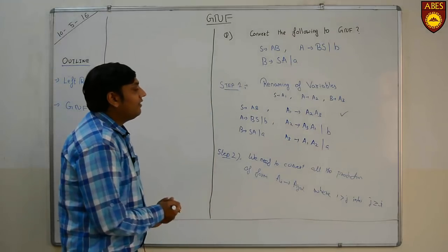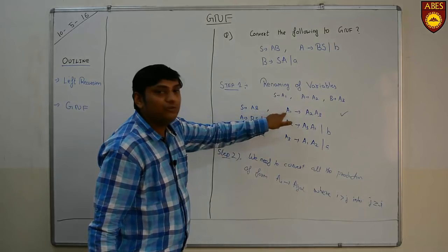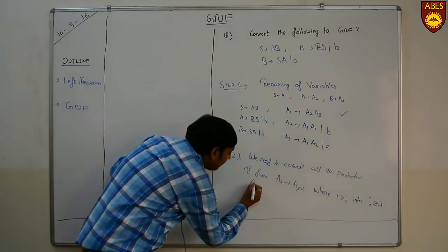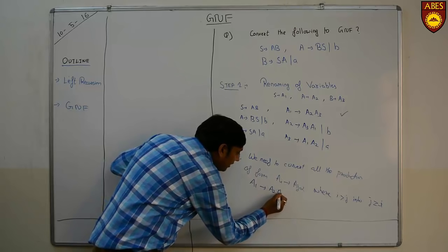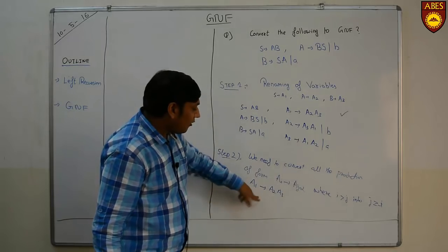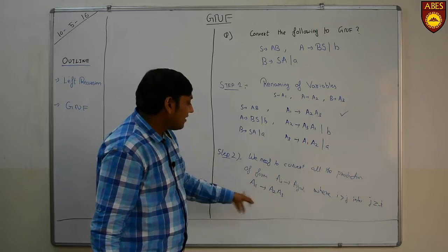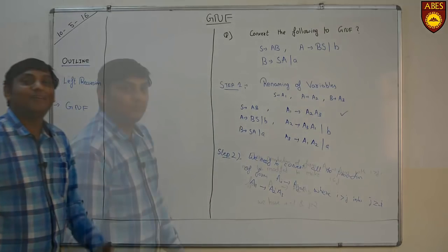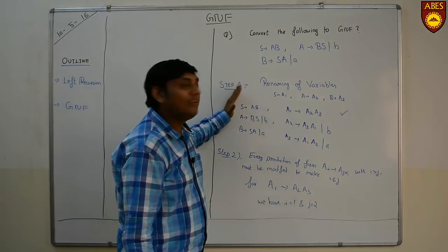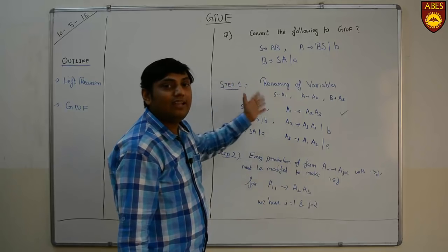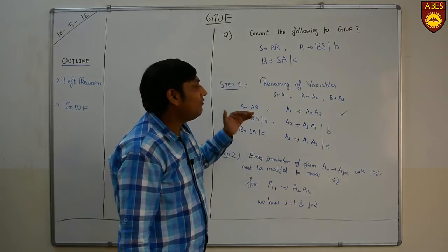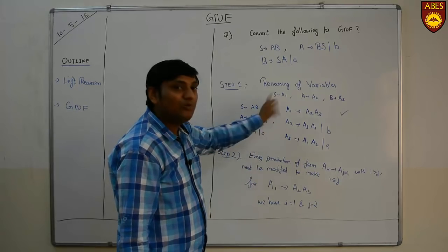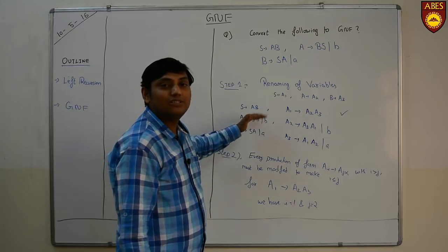In this step we are seeing that there are three productions. A1 tends to imply A2 A3 — here A1 is Ai and it is forming A2 first, so i equals 1 and j equals 2. Since i is not greater than j, we don't need to modify it. The main motive was to find the value of the biggest variable and substitute into remaining A2 and A1 to convert into GNF.